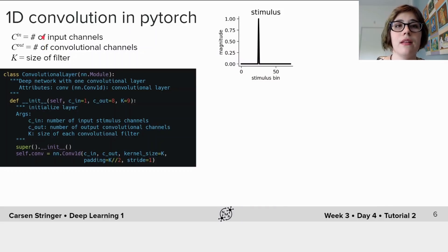And then the other one is c_out which is the number of convolutional channels you have, which in this case we'll set the default value to eight. And then the last one is the size of the filter K, which we set again to a default value which is nine, which is around nine of these stimulus bins, but you can play with these parameters.